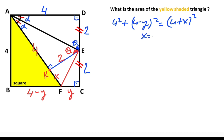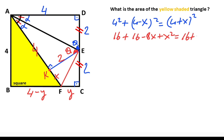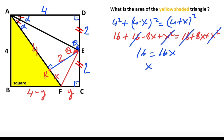We know that x equals y, so substituting x for y we get: 16 plus 16 minus 8x plus x squared equals 16 plus 8x plus x squared. The squared terms cancel, and the 16s on each side cancel, giving us 16 equals 16x, so x equals y equals 1.